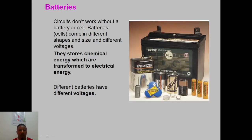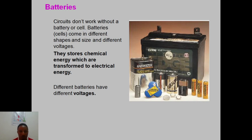We need to consider batteries because they are the voltage provider in a circuit. A circuit doesn't just work without a battery or cell. Batteries are very important and they come in different shapes and sizes and different voltages. They store chemical energy which is transformed or transferred to electrical energy.